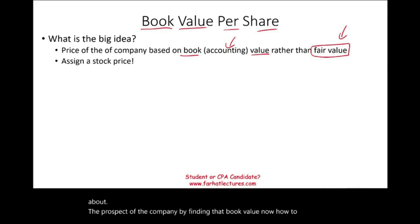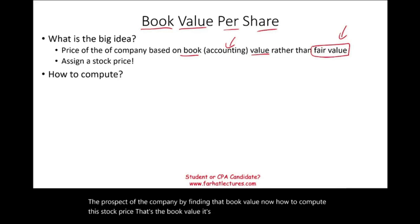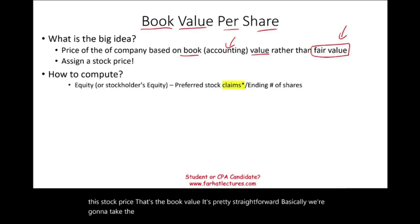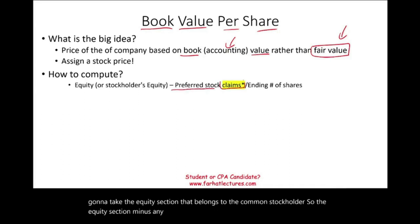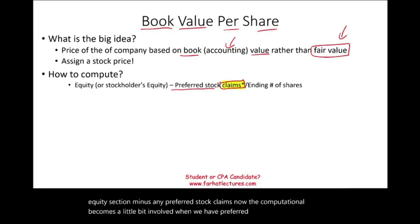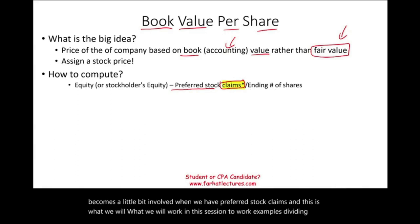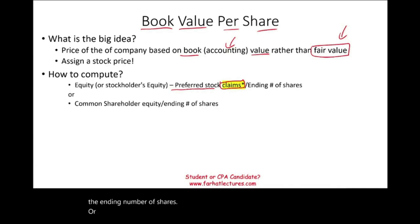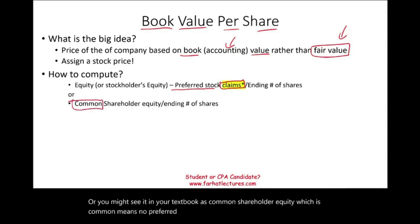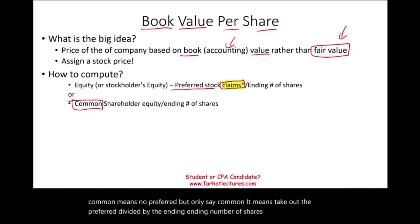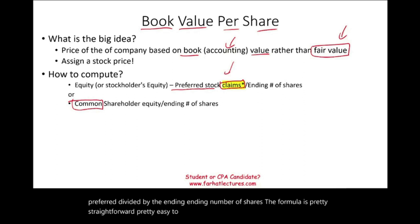How do we compute this stock price — the book value? It's pretty straightforward. Basically, we're going to take the equity section that belongs to the common stockholder — so the equity section minus any preferred stock claims. The computation becomes a little bit involved when we have preferred stock claims, and this is what we will work through in this session. Divide by the ending number of shares, or as your textbook may say, common shareholder equity divided by the ending number of shares.